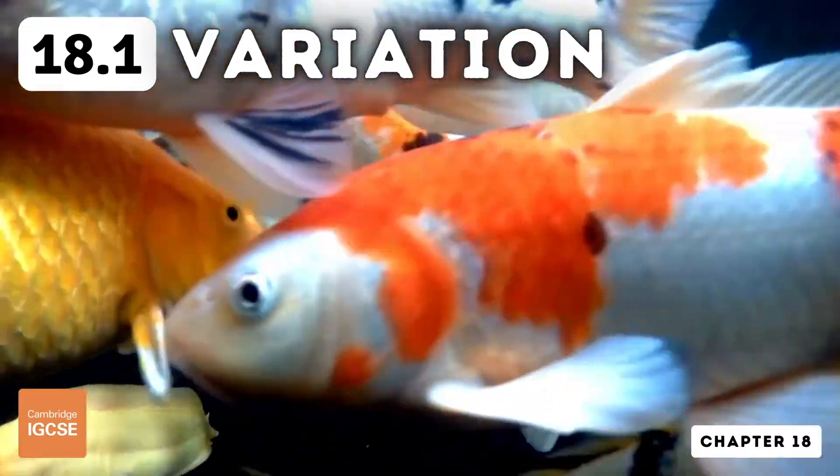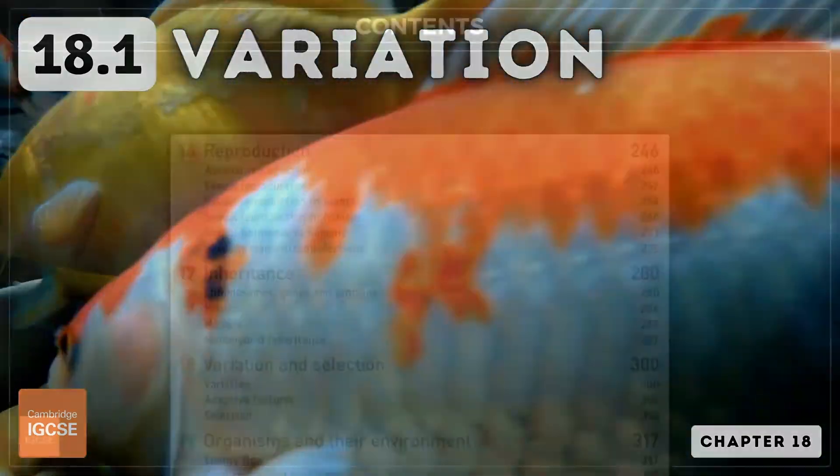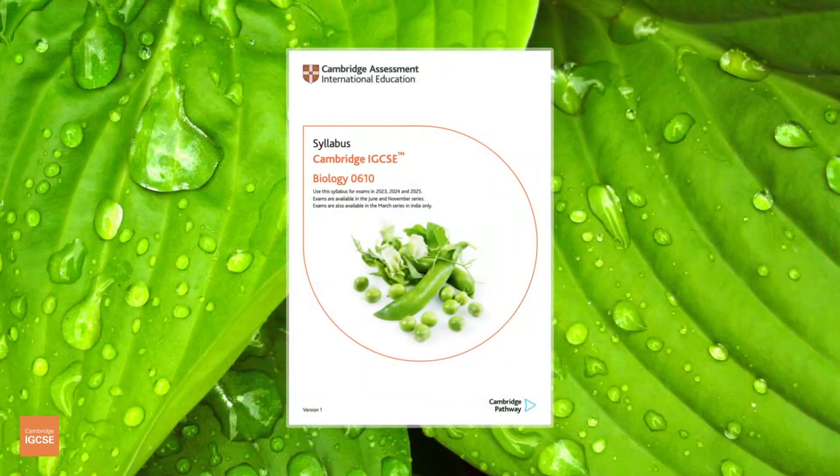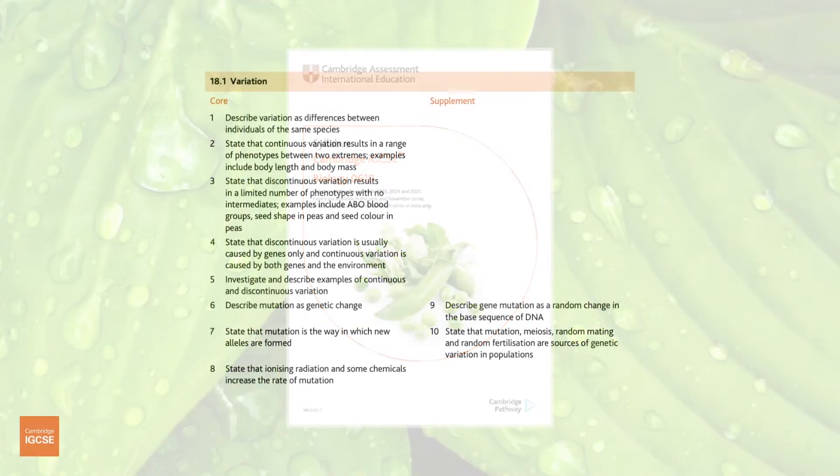Hello and welcome to another complete Cambridge IGCSE biology lesson, where you'll learn absolutely everything you need to know on topic 18.1, variation. As always, we'll be following the Cambridge syllabus exactly, and we'll cover absolutely everything you need to know for your final exam.